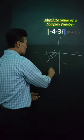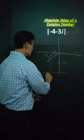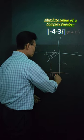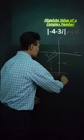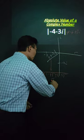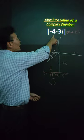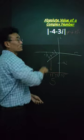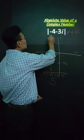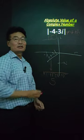How do we find that? You take the square root of negative 4 squared plus negative 3 squared, which equals 5. So the absolute value of negative 4 minus 3i is 5.